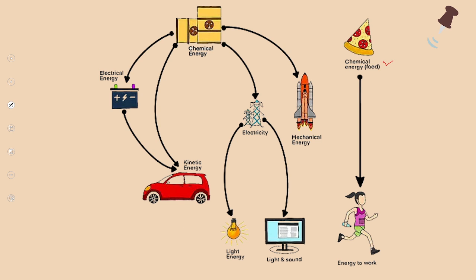First of all, we have chemical energy from the food that is consumed by the human, and it is converted into mechanical energy — the energy that is utilized to do different works.